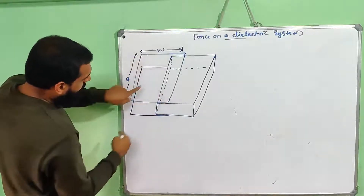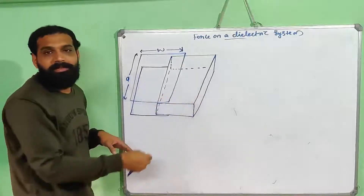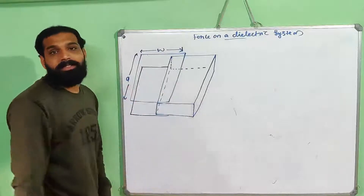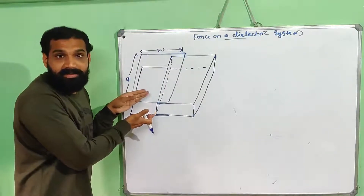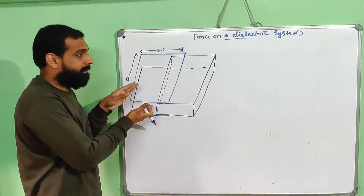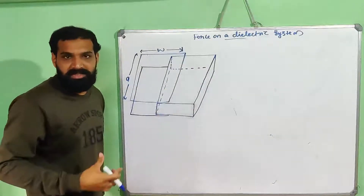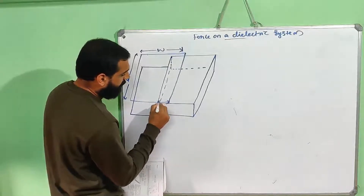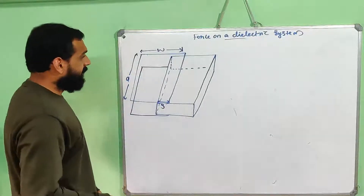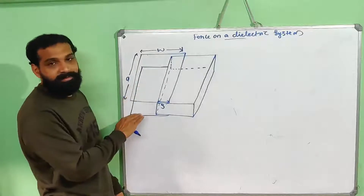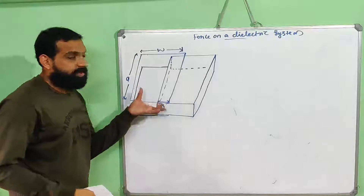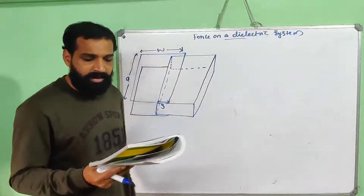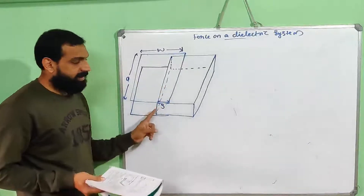What happens is it takes two plates. This plate is removed by a little. A dielectric block, because it is removed a little. This is the electric field between two infinite sheets of charge. This is the S length — the S portion of the dielectric. This is the capacitor. Partially, this is the air, and this is the dielectric. So this is a combination of two capacitors: one is the dielectric capacitor and one is the air capacitor. Force is acting on the dielectric slab.